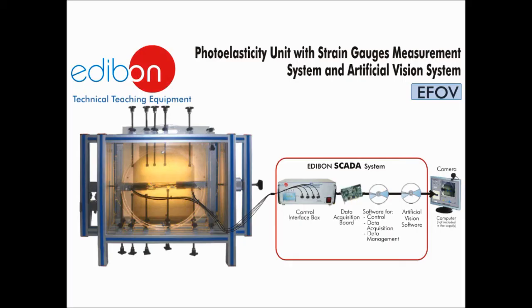The third photoelasticity unit, which was not demonstrated in this video, is the EFOV. It uses a polariscope and computer software to digitize and analyze the colors within the test specimen. This type of system is implemented in industrial applications to control manufacturing quality of materials such as glass.